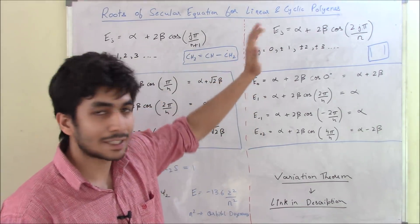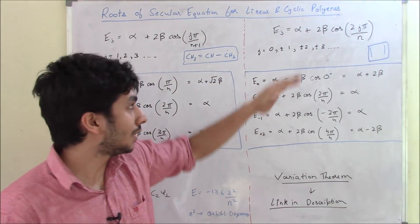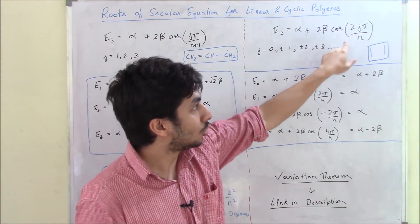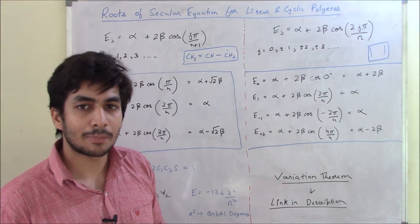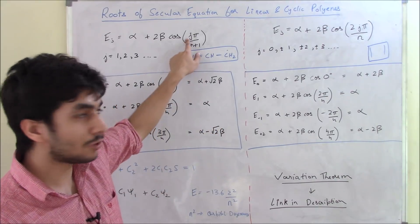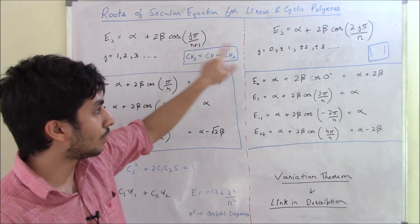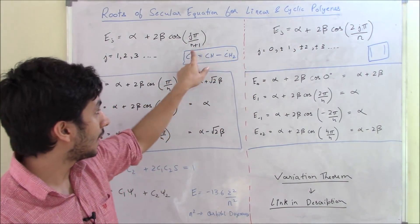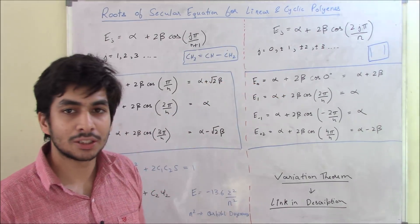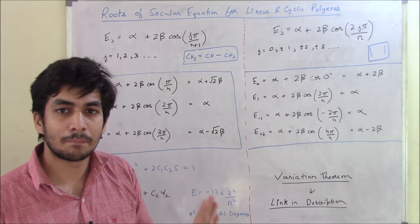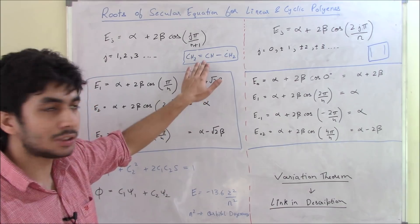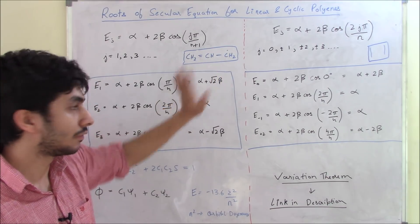For cyclic polyenes the formula is E_j = alpha + 2 beta cos(2j·π / n). The only difference is: for linear polyenes you have j in the numerator and n+1 in the denominator, whereas for cyclic polyenes you have 2j in the numerator and simply n in the denominator.